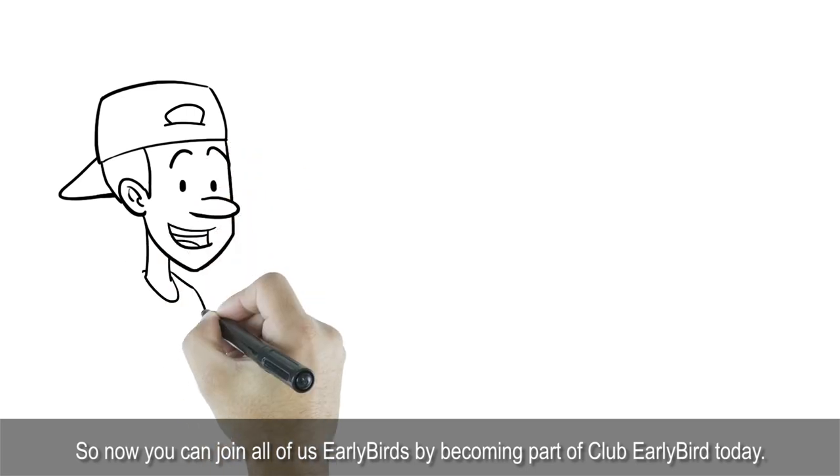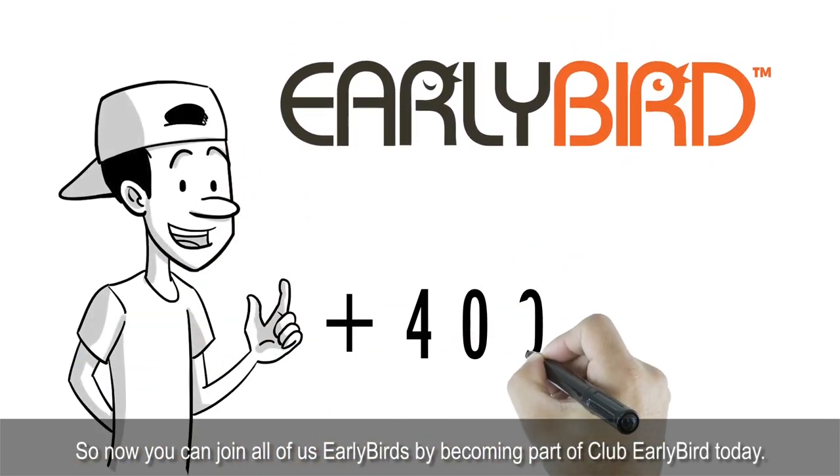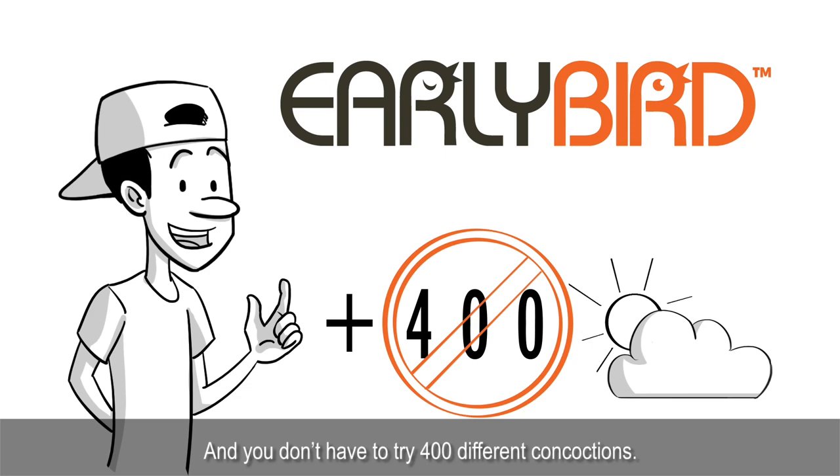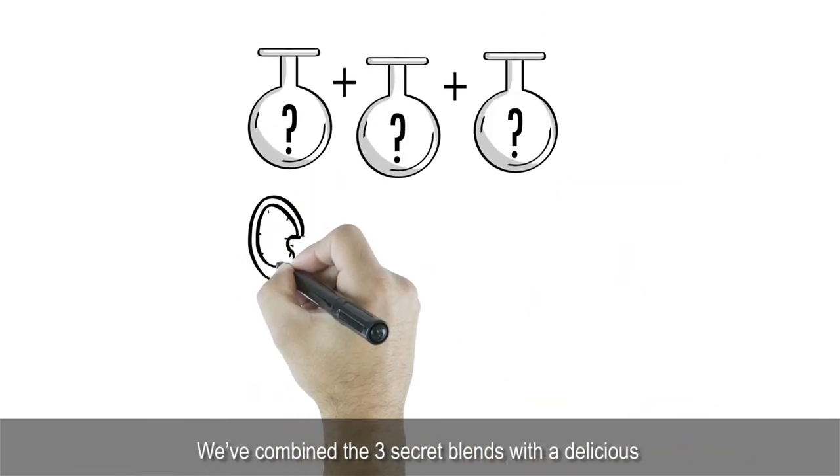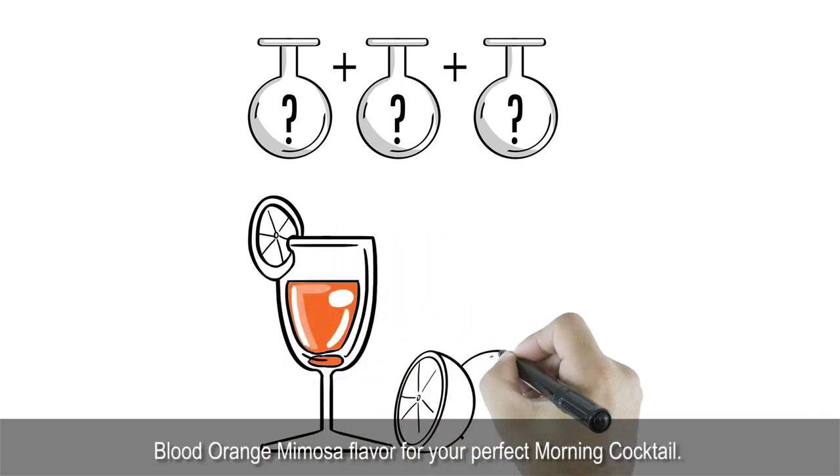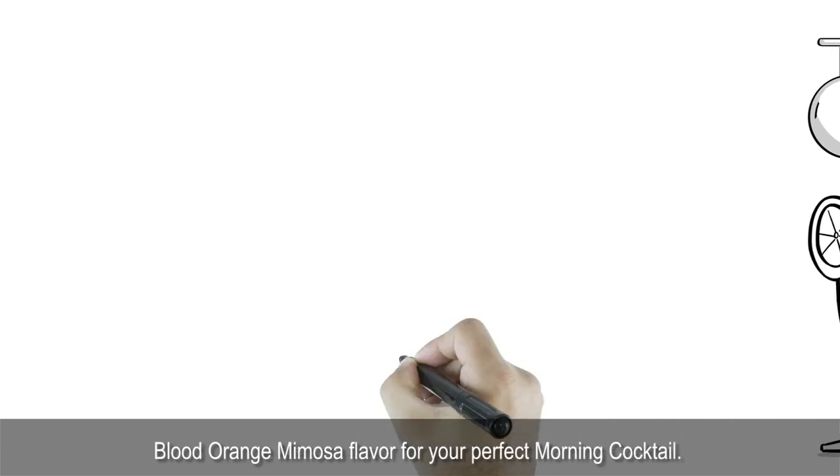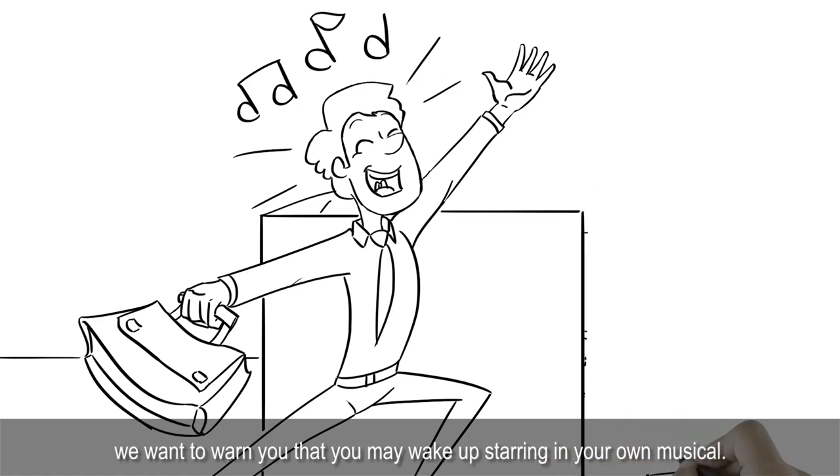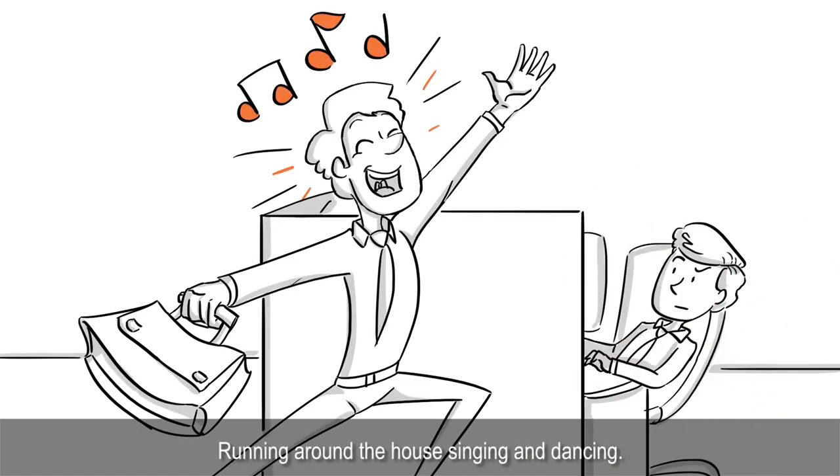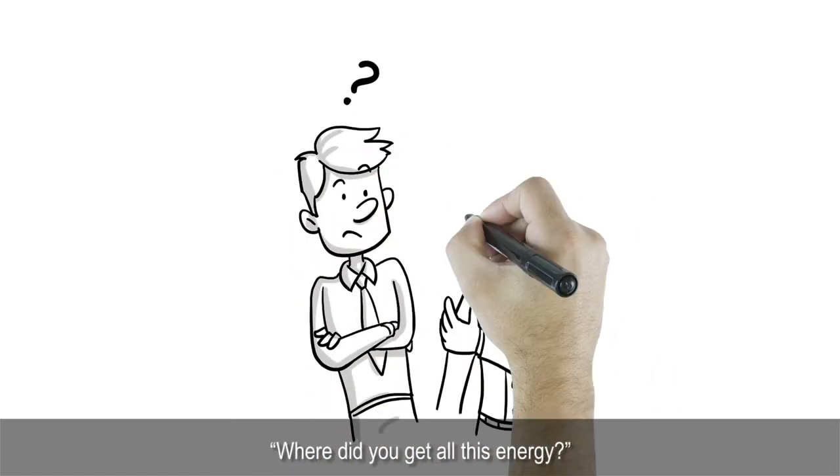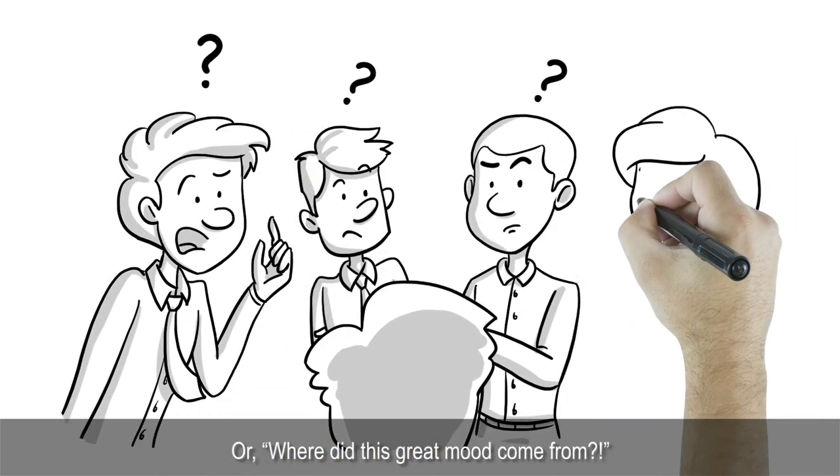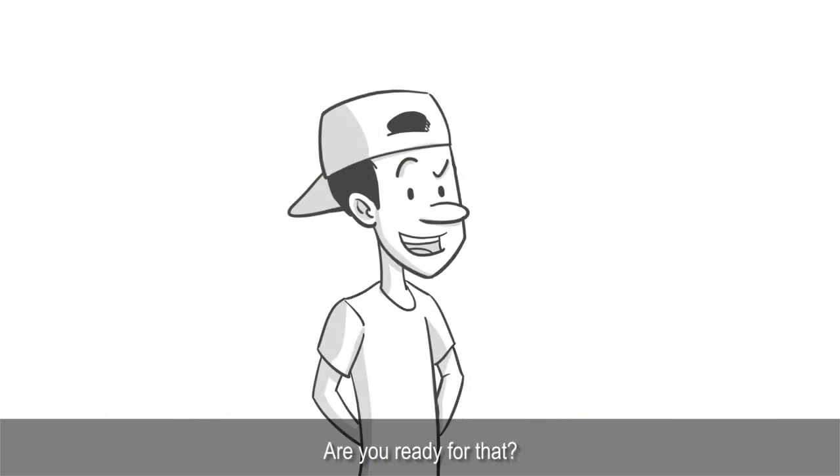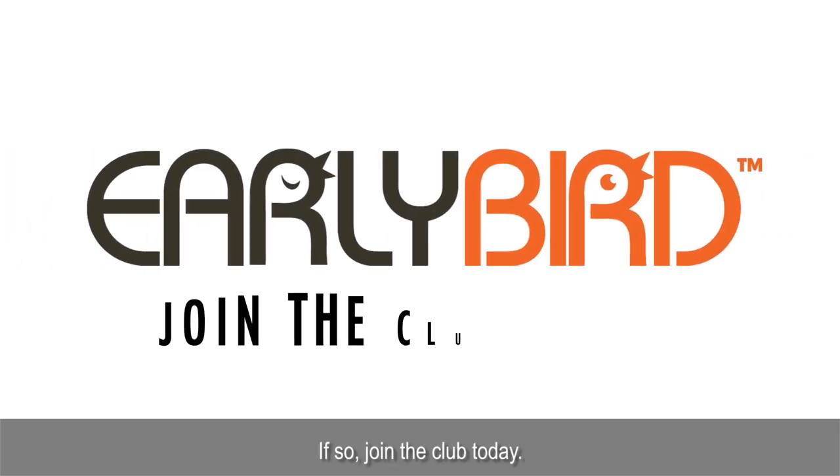So now you can join all of us Early Birds by becoming part of Club Early Bird today. And you don't have to try 400 different concoctions. We've combined the three secret blends with a delicious Blood Orange Mimosa flavor for your perfect morning cocktail. But before you join, we want to warn you that you may wake up starring in your own musical, running around the house singing and dancing. Your friends may ask, where did you get all this energy? Or where did this great mood come from? Are you ready for that? If so, join the club today!